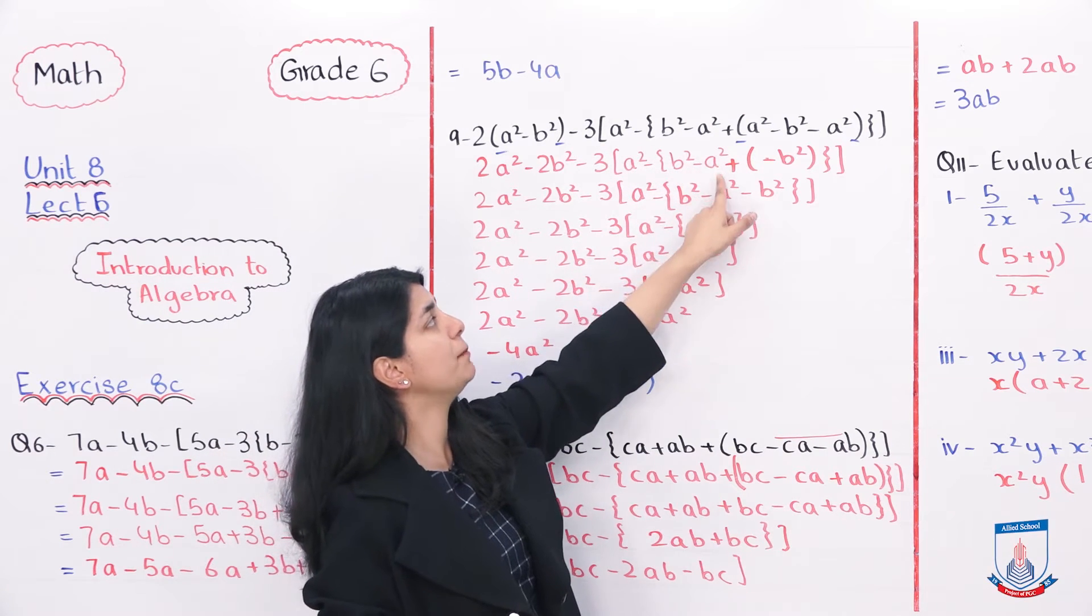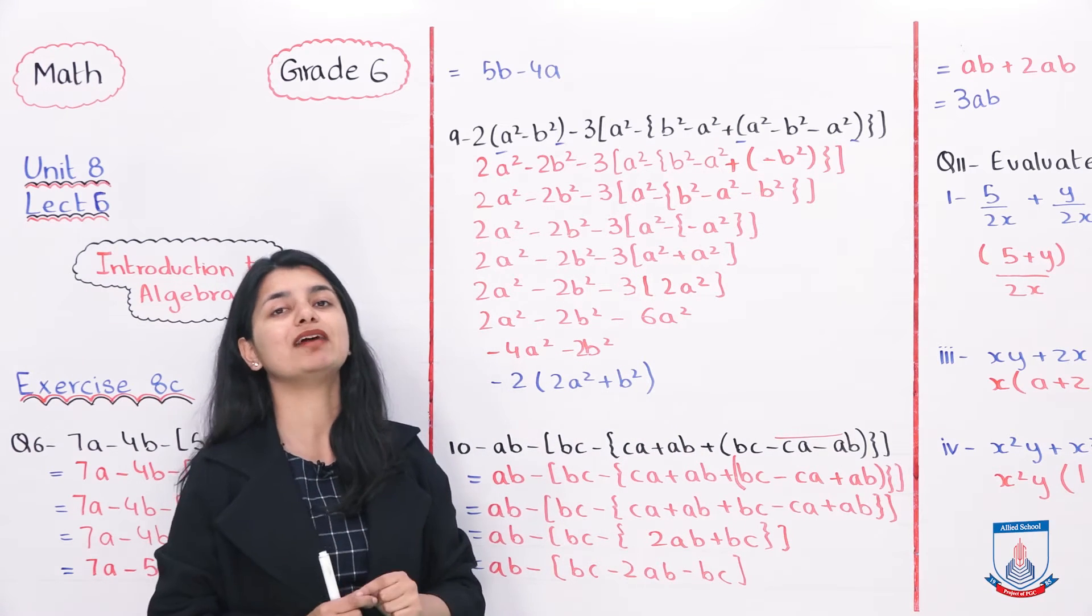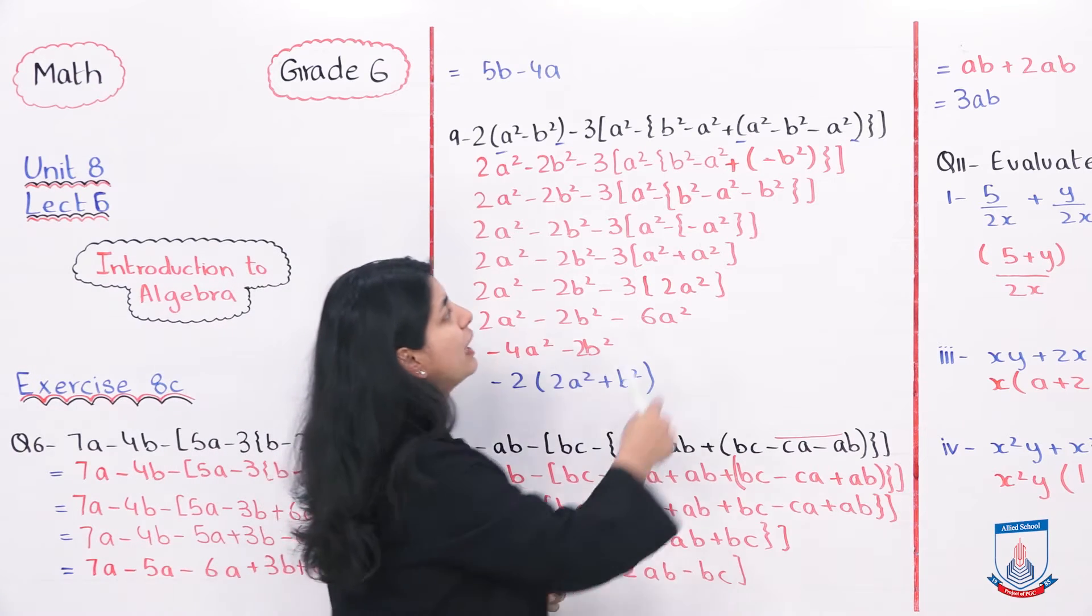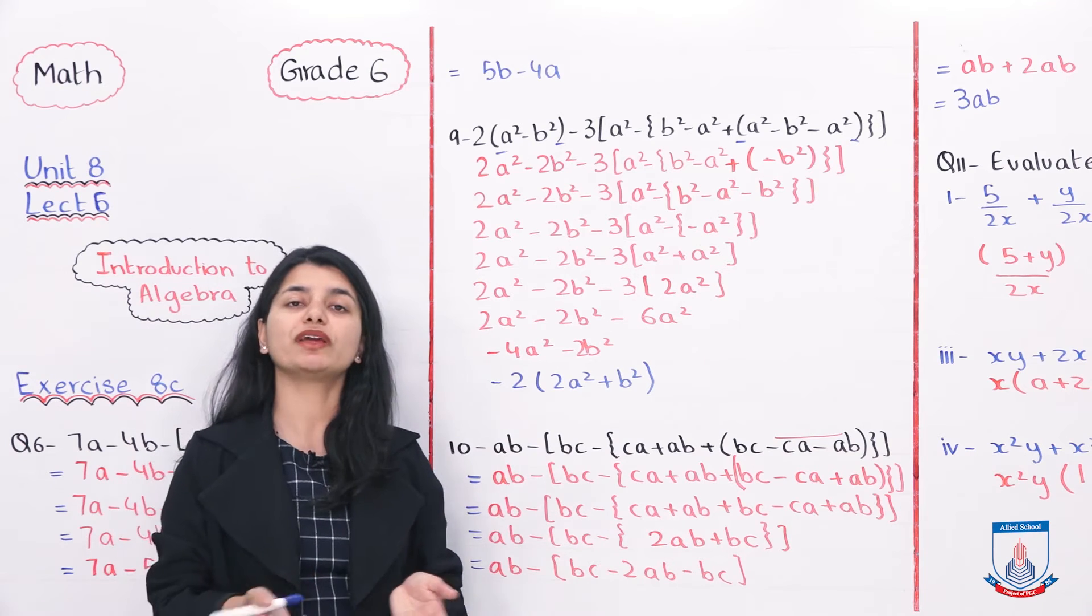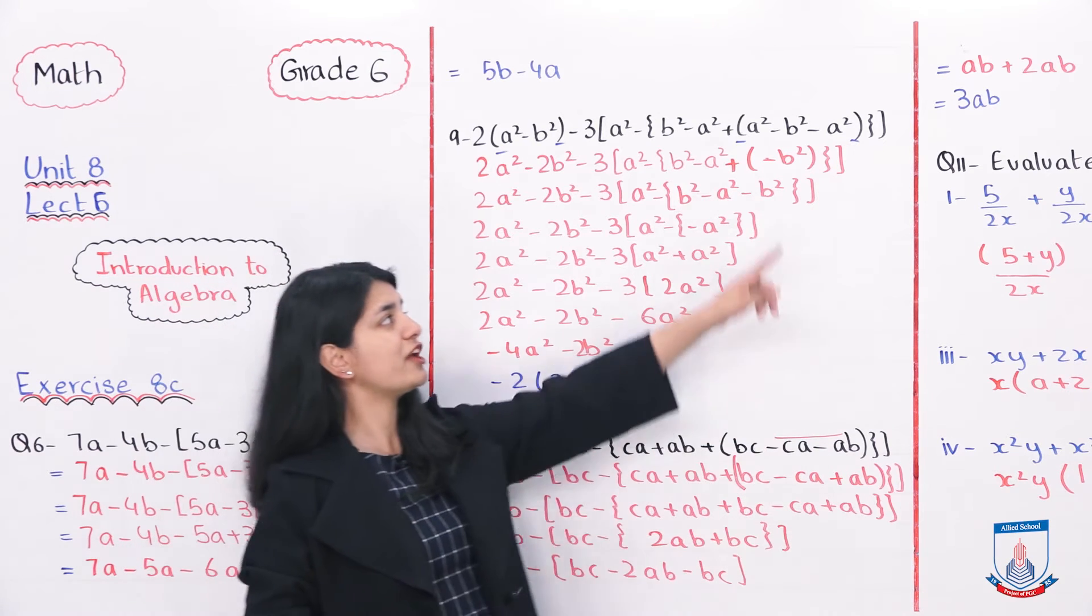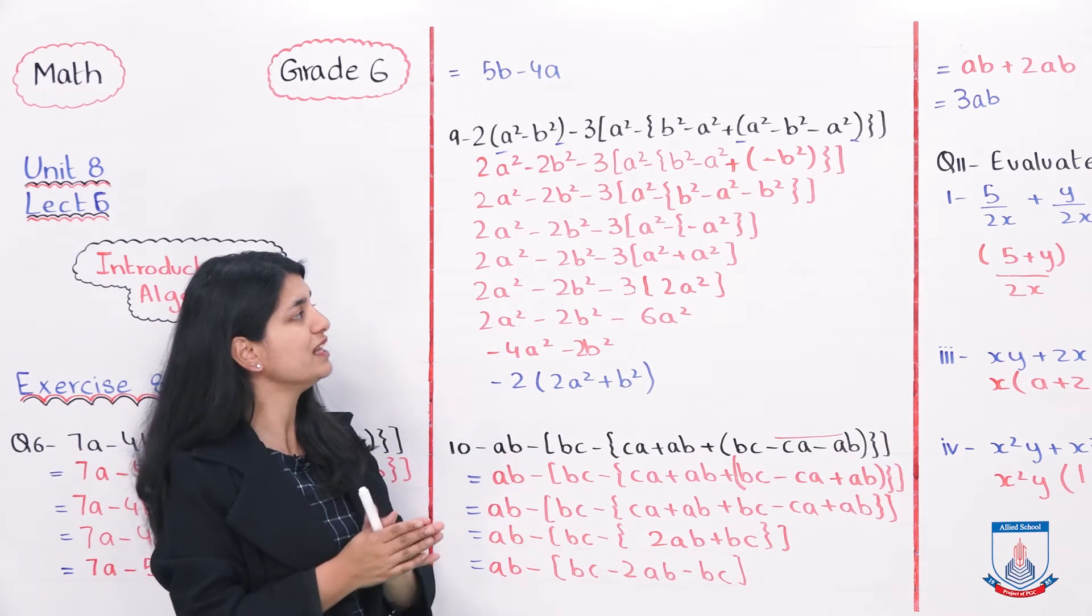B square minus A square plus. Ab humein change karna hai apne jo dusri parenthesis se uske andar wale number ko. Ab yahan per agar aap dekho, A square minus A square kya ho ga? Wo do zero ho gaya, it will be nothing. To aapke paas rehne ga sirf minus B square in your bracket.